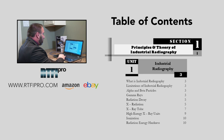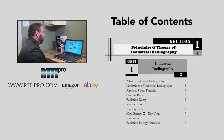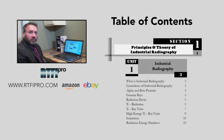We're going to go to section one. The table of contents shows section one broken down into three units. Unit one is the theory portion of industrial radiography. Topics covered include: what is industrial radiography, the limitations of industrial radiography, alpha and beta particles, gamma rays, radiation decay, x-radiation, x-ray tube, high energy x-ray units, ionization, and radiation energy hardness. That's the theoretical portion of unit one.